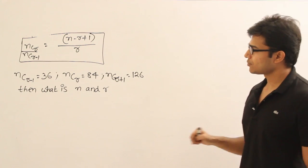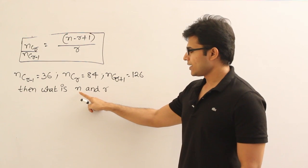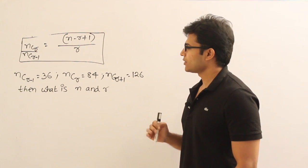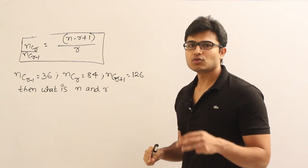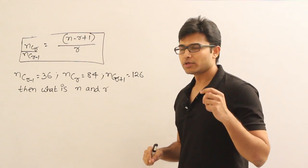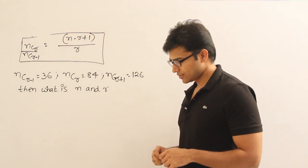Now using these three values, we are supposed to find out the values of n and r. Then what I do is using these three equations, I will get two equations, and from those two equations I will solve these two variables.